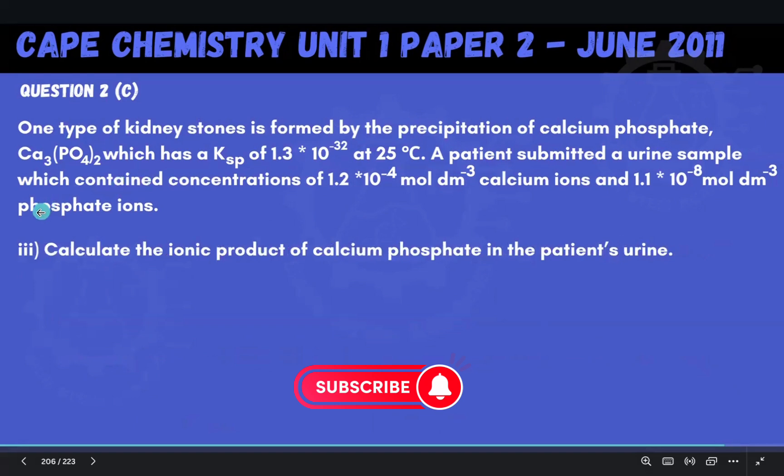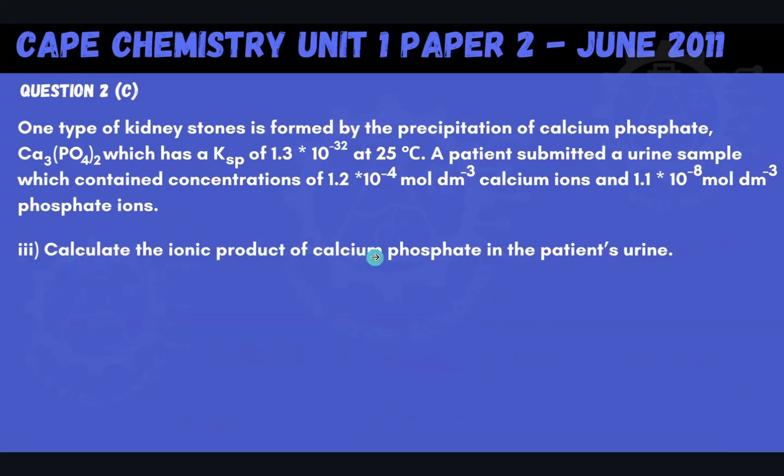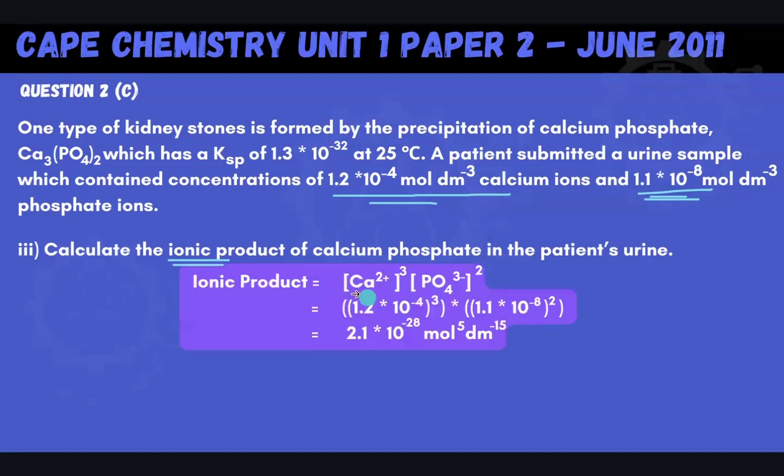So now moving right along, we're being asked to calculate the ionic product of calcium phosphate in the patient's urine. So remember, they told us, they gave us the concentrations of each ions, the phosphate ions. So we're given the concentration of what the phosphate ions are in the patient's urine, and we're given the concentration of what the calcium ions are, and what the phosphate ions are in the patient's urine. And so if we're supposed to find the ionic product, then, based on what the Ksp expression is, we can use that relationship in terms of ion concentrations as our starting point.